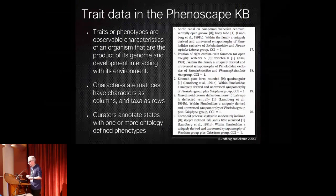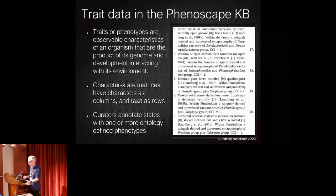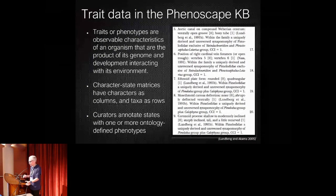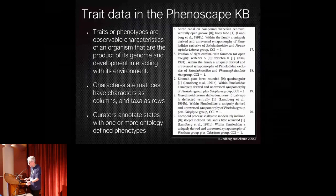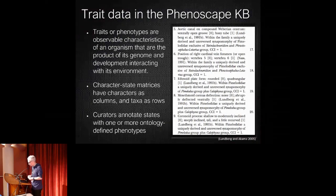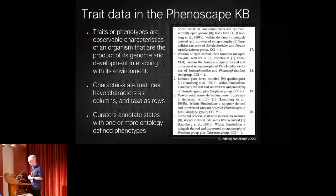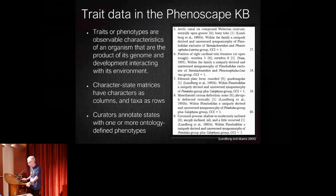Observable characteristics of an organism that are the product of its genome and developing and interacting with its environment. So this is probably not too unfamiliar character. And so I alluded to earlier, for natural phenotype data, these data are typically published as character state matrices, and in such matrices, characters are the columns, taxa are the rows, and curators link the states, which are essentially the cells, to one or more ontology defined phenotypes.